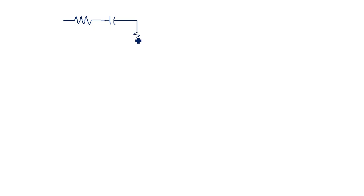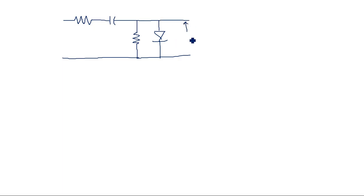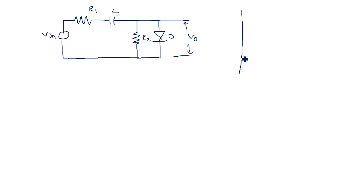For such waveforms, ideal circuits are not preferred. A resistor R1 should be added in series with the capacitor and another resistor R2 should be added in parallel with the diode. This gives the practical clamping circuit used for unsymmetrical waveforms. I will draw both input and output waveforms so you can understand the different areas in the positive and negative regions.